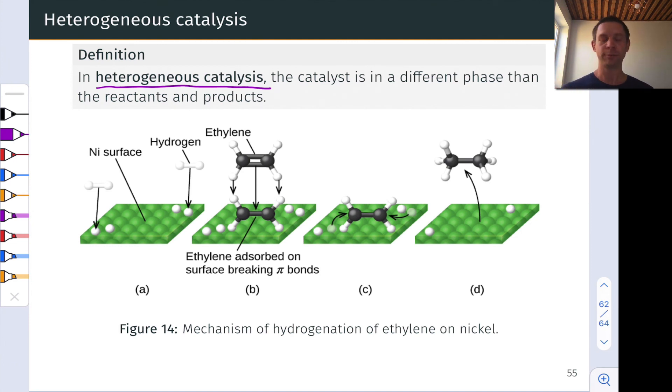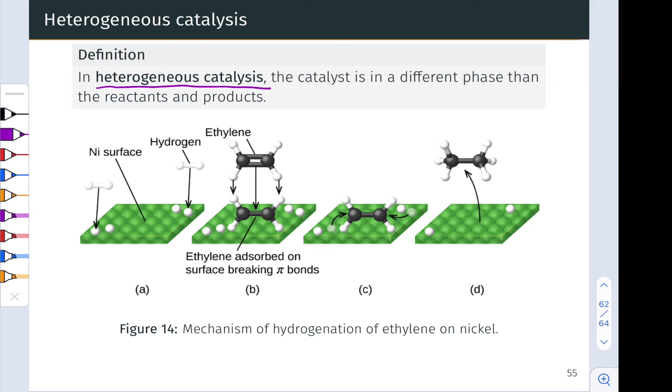And hydrogen, specifically, is absorbed onto the metal. And then the ethylene binds to the metal surface as well. Hydrogen atoms are transferred. And after that hydrogenation has taken place, the ethylene molecule, the ethylene molecule, the product, departs.